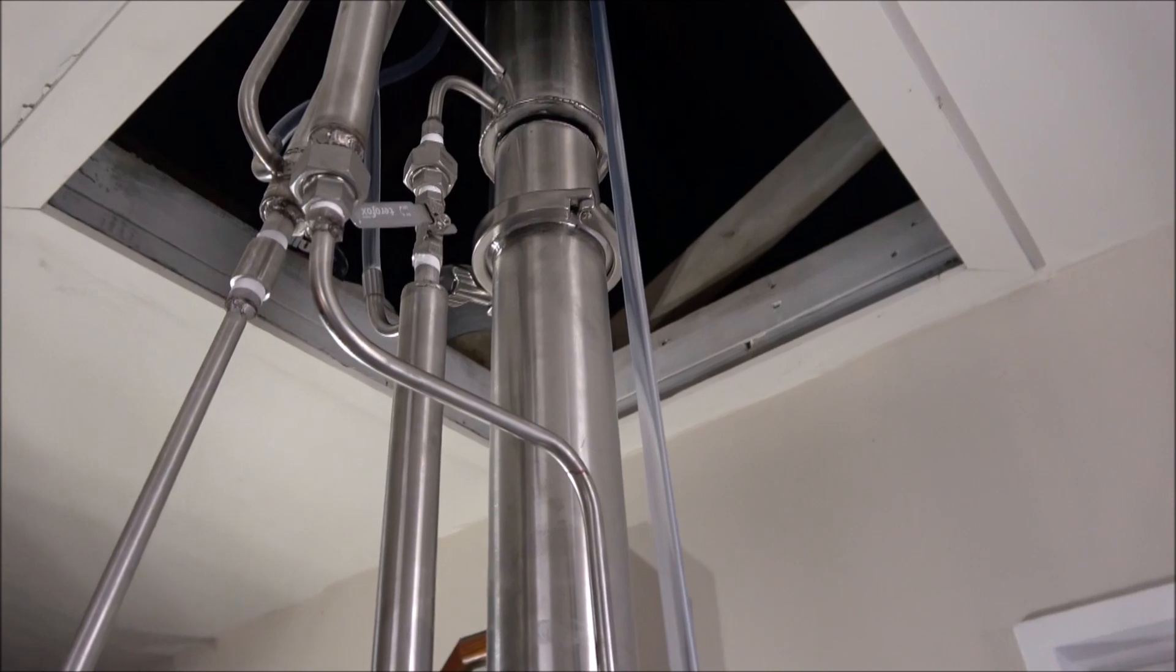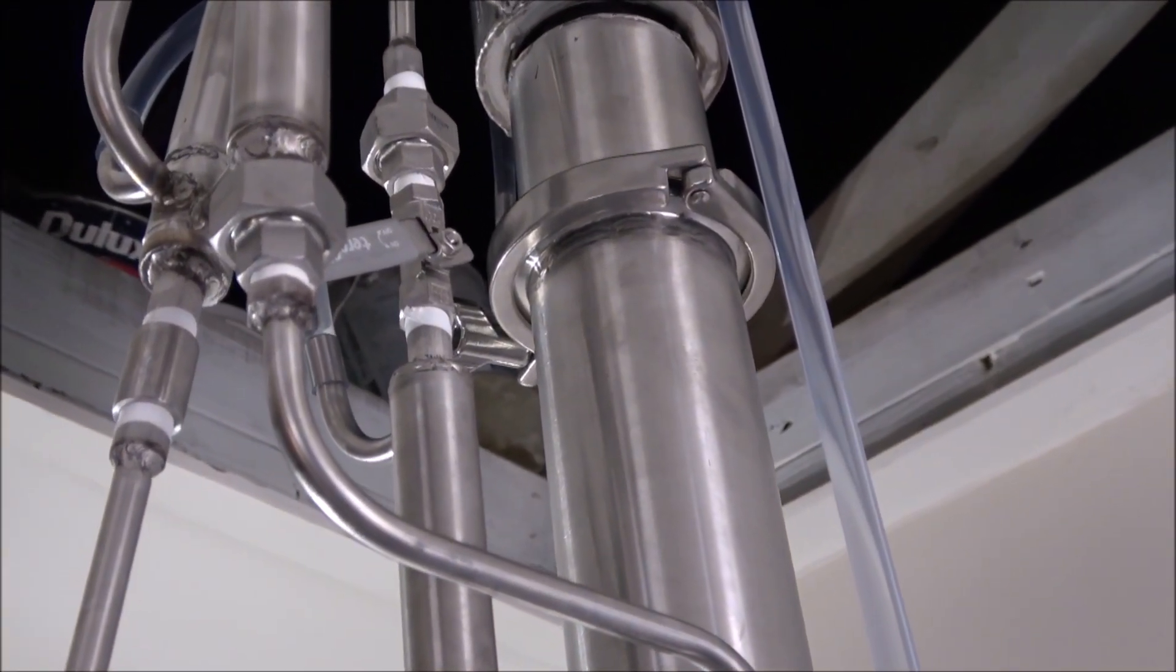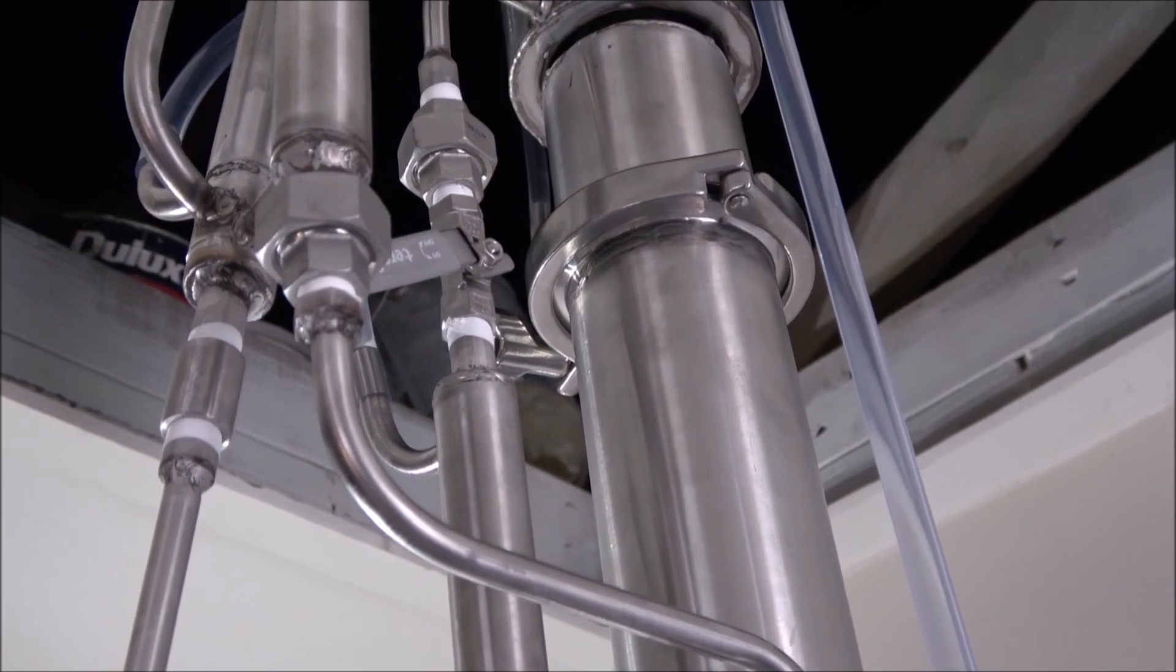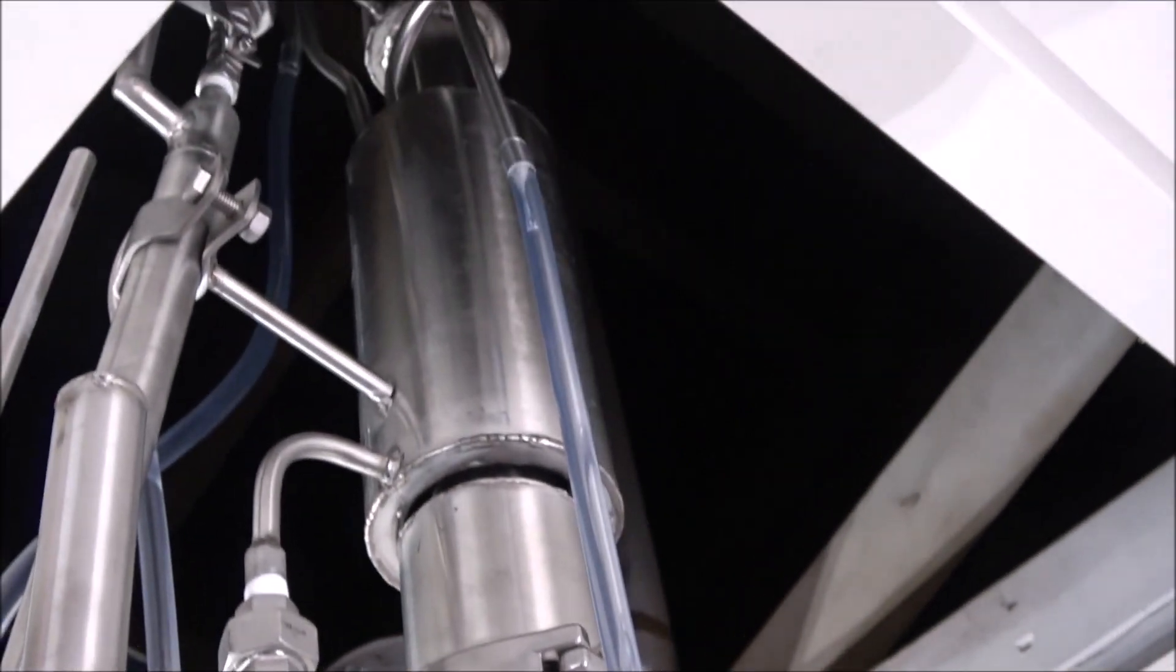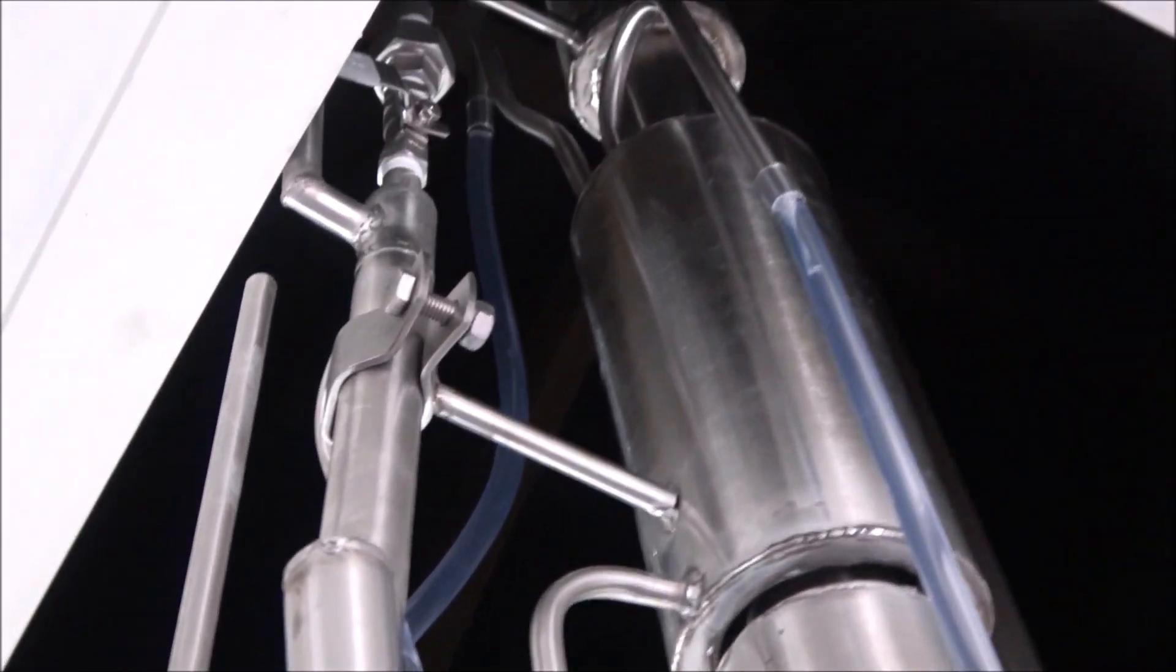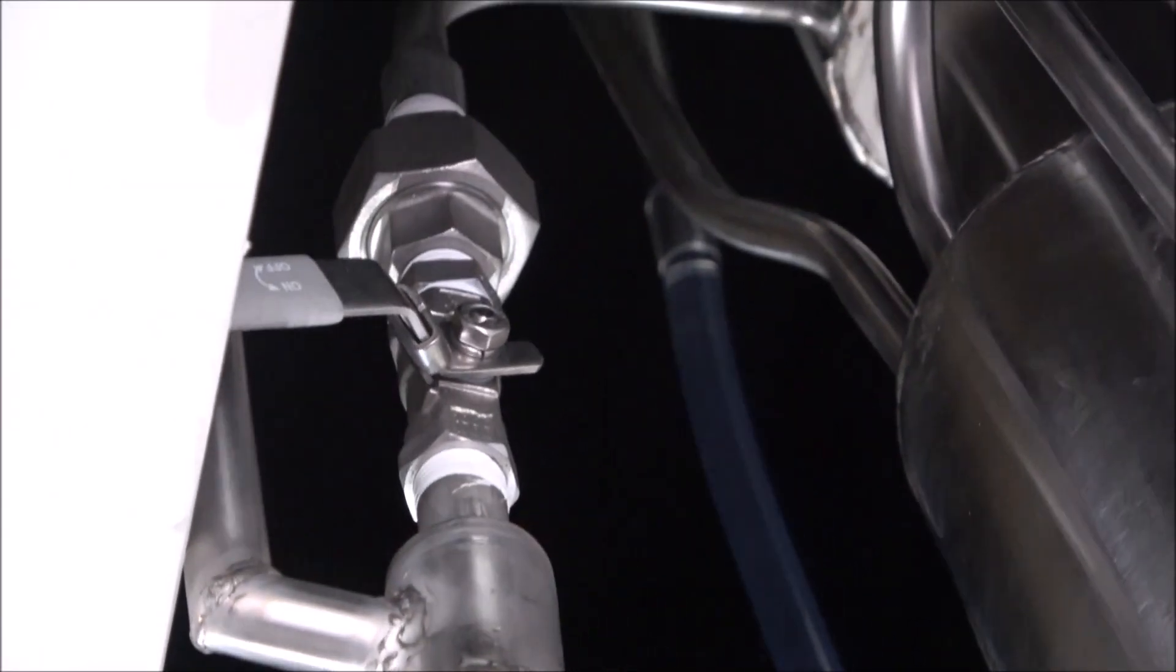This particular valve is for the alcohol flow control and also reflux control. That one at the top controls the amount of heads you can cut, you can bleed from the column.